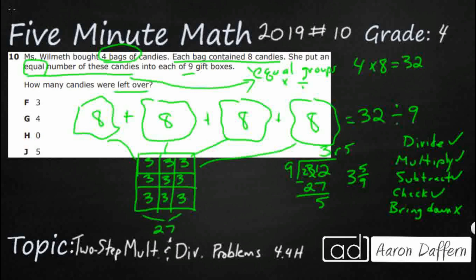But remember I had 32, which means there are going to be these five left over. That gets me back to my 32. And that's what I'm looking for is how many are left over. So my answer is J, five.